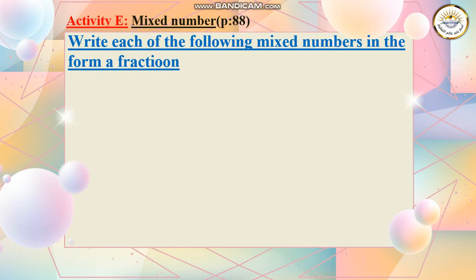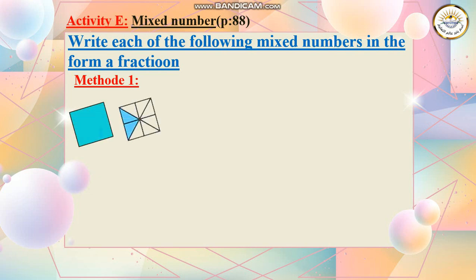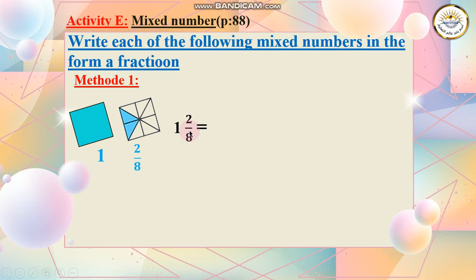Write each of the following mixed numbers in the form of a fraction. So let's see. I have here Method 1. I have these two squares. This square is divided into 8 pieces. Here I have one whole piece and 2 over 8 colored. So the number is 1 and 2 over 8. This is the mixed number that I have.